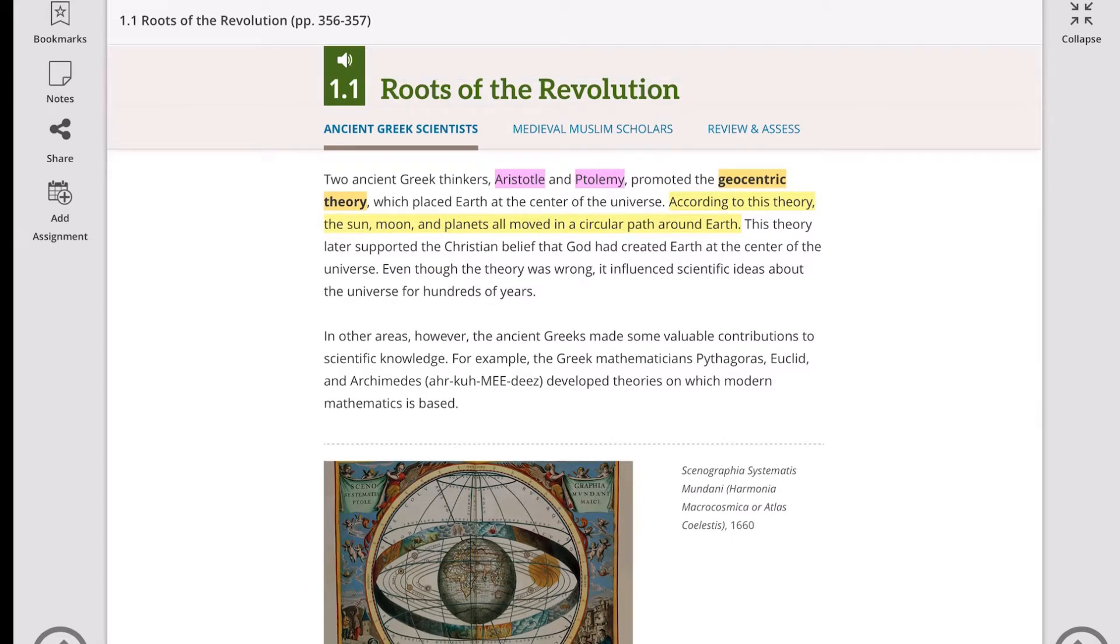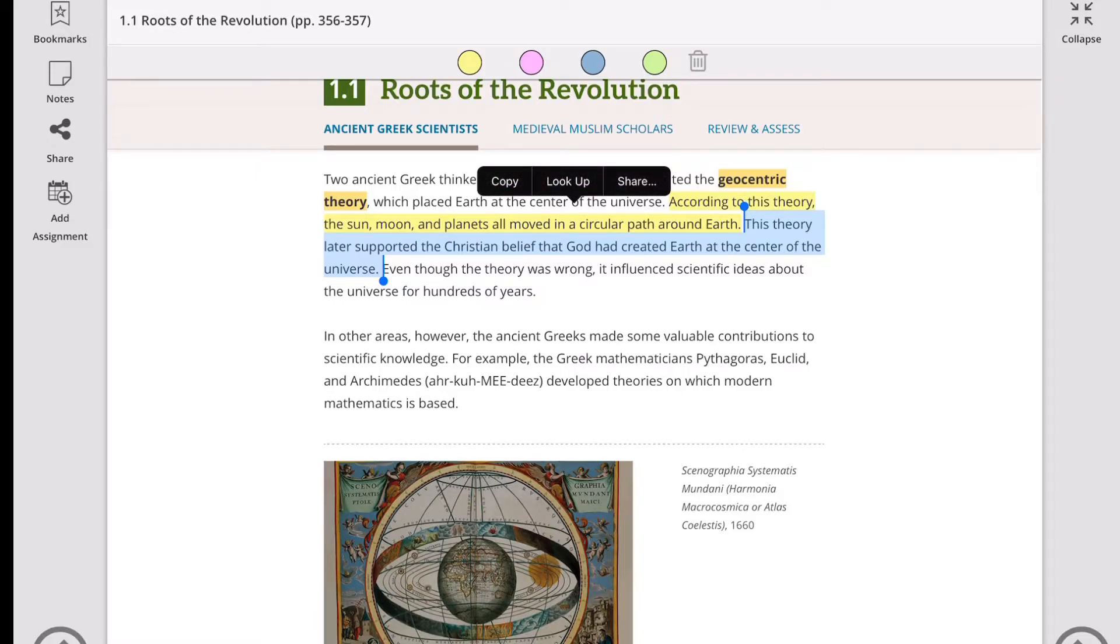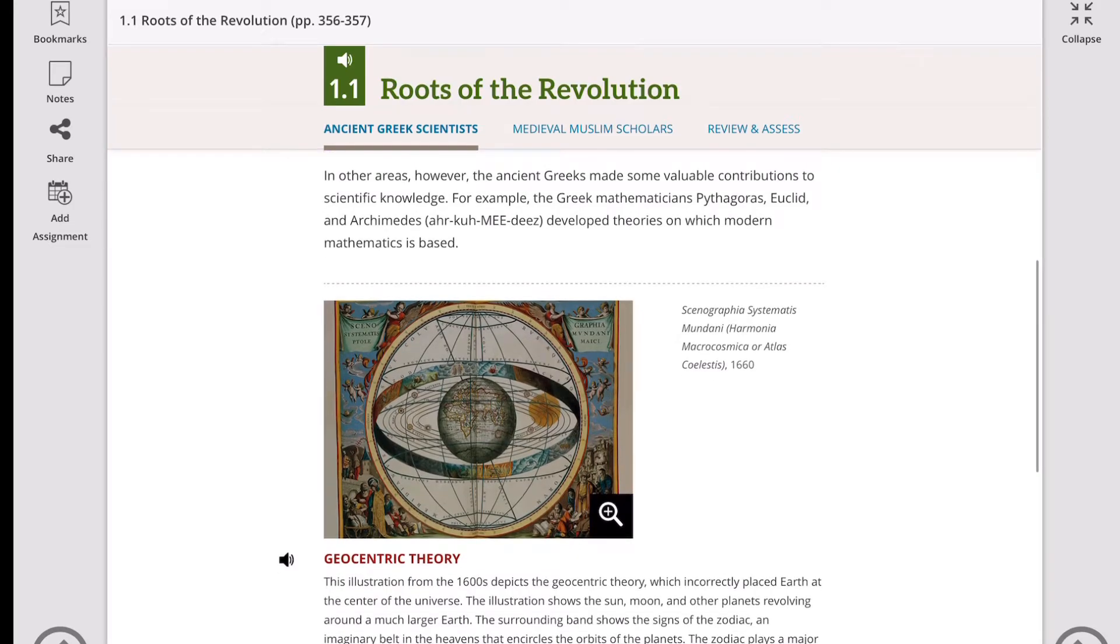So obviously, even though the theory was wrong, it influenced scientific ideas about the universe for hundreds of years. Well obviously, not every time they got it wrong. There are great philosophers, great thinkers. Aristotle and Ptolemy themselves are great thinkers, but of course they can't be right all the time.